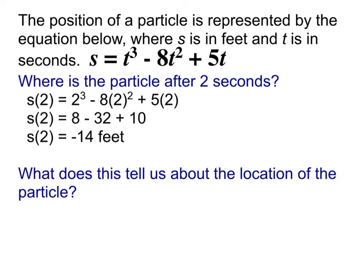What does that actually tell us about the location of the particle? After two seconds, it's going to be 14 feet away — but the real question is which way. That would depend on a definition we don't have here. Maybe the right direction was defined as positive, in which case this means it was 14 feet to the left. Or positive could mean away from us, so it went 14 feet behind us. Or if up was defined as positive, this thing went 14 feet down. It all depends on how the direction was defined, but it does tell us the particle is 14 feet in the negative direction.